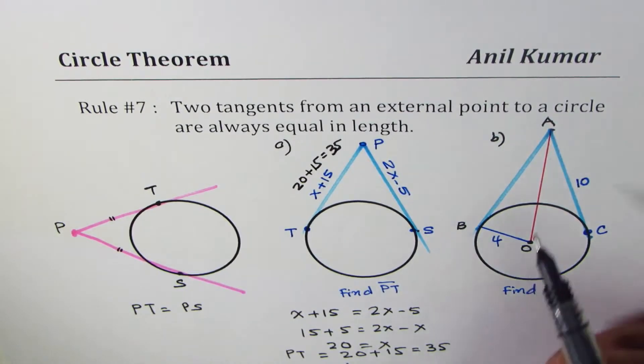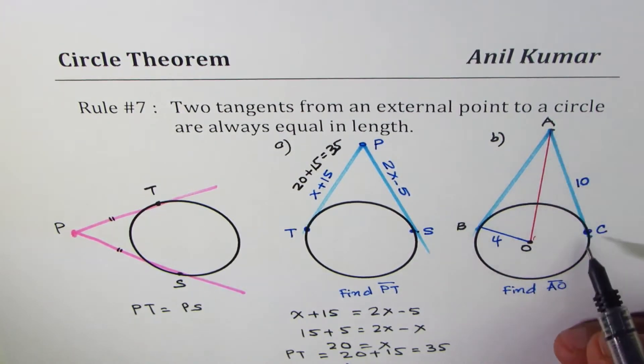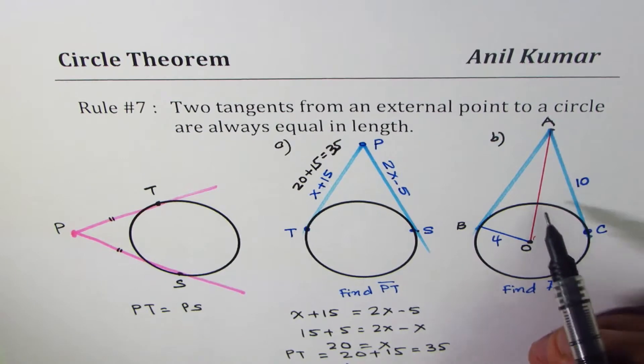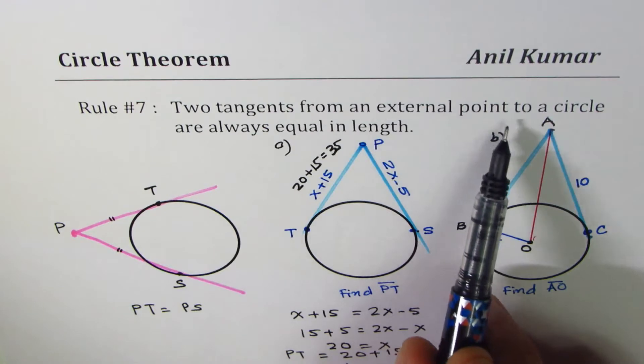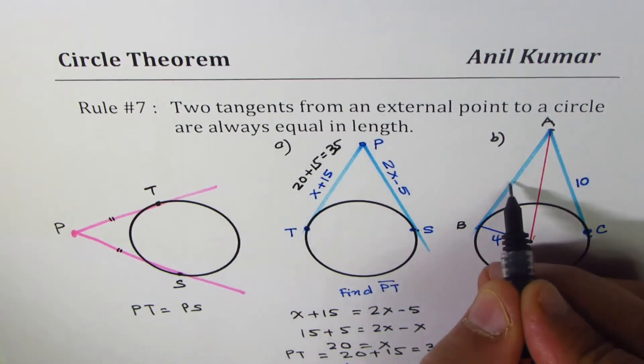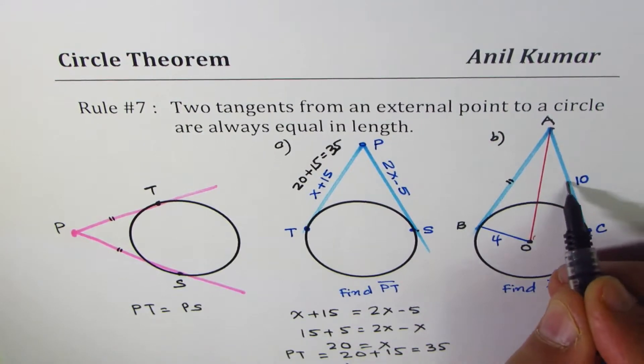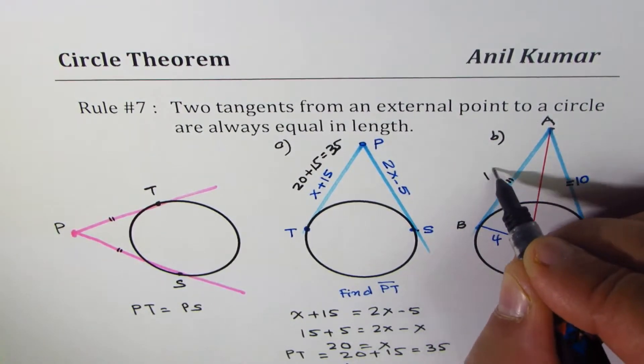Now let's look into part B. Here we are given length of one of the tangents, which is 10. As per the rule, two tangents from an external point to a circle are always equal in length. That means AB should be equals to AC. So AB is also 10.